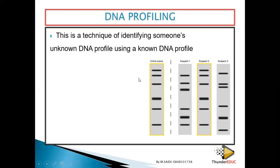For example, at a crime scene, someone committed a crime. When I go there, I find material such as hair or blood and collect the sample for DNA profiling. That's why in most cases when there is a crime scene, we don't allow people to go there — because your hair could be included in the sample and make you a suspect.